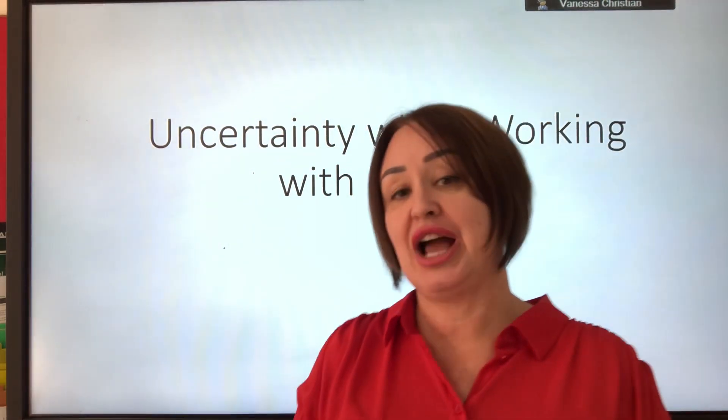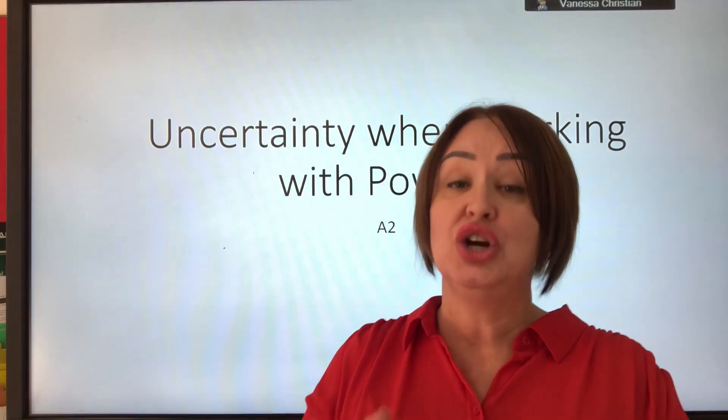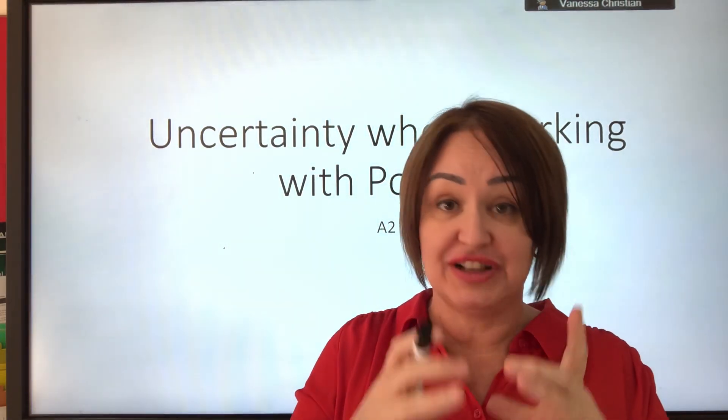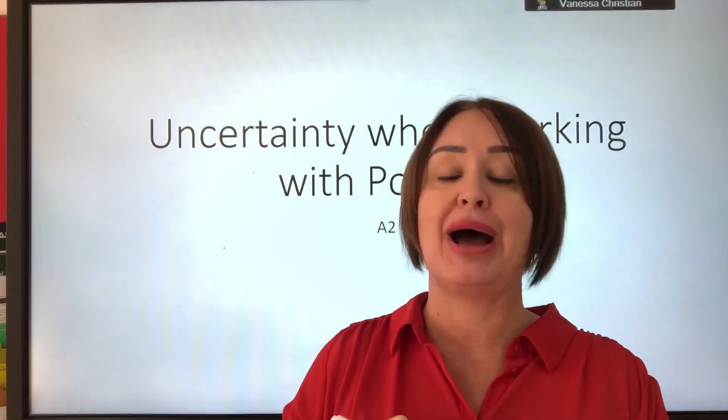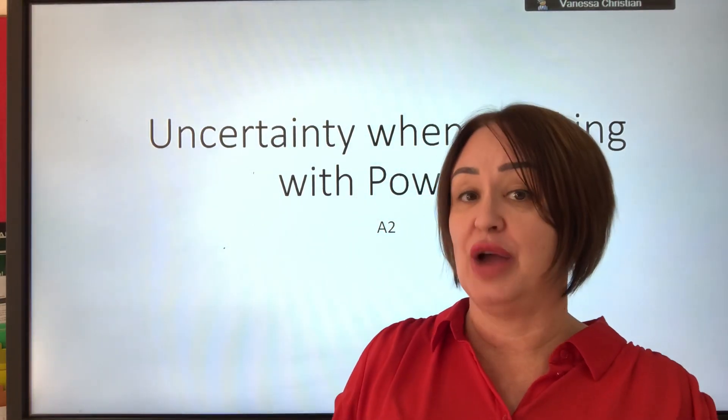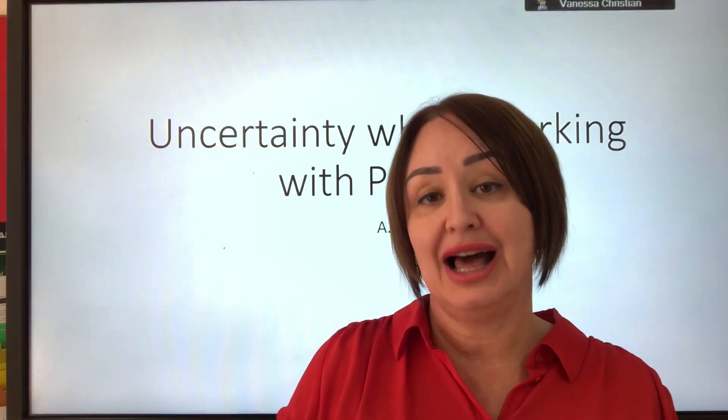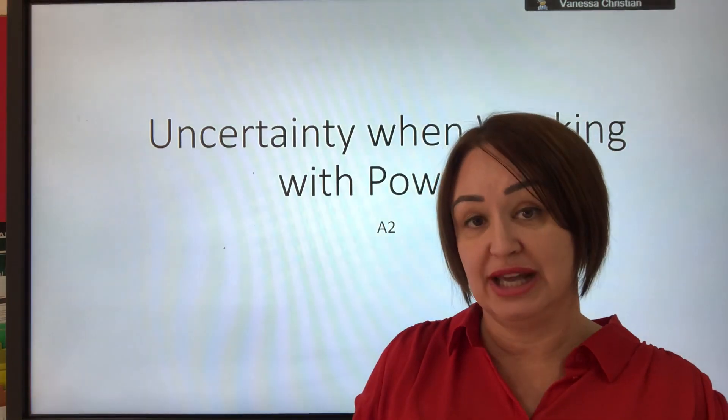Today we're going to look at how to calculate uncertainty when you're calculating the area of a circle, because we use a power there - pi r squared, the squared is the power. Will a question come up? We don't know, but one thing we do know is it's written in your practical handbook that you know how to do this.